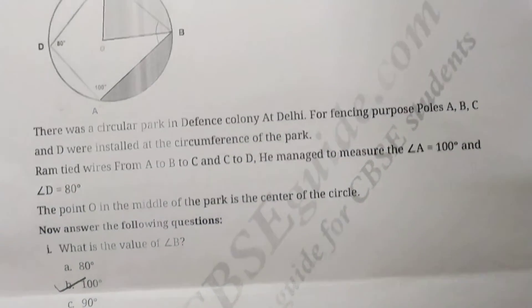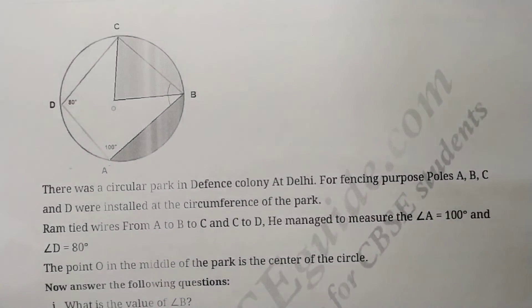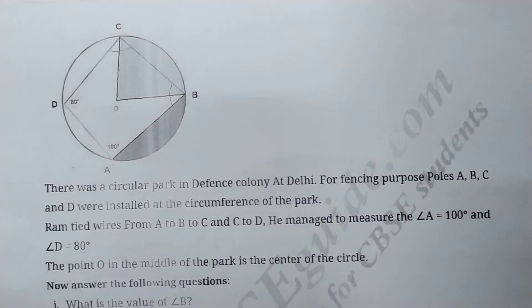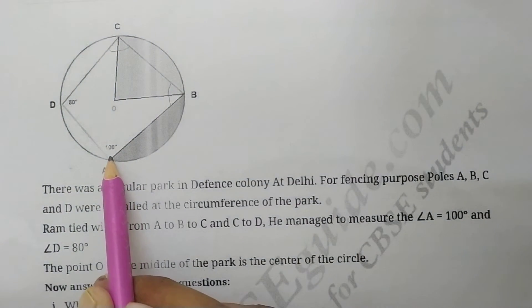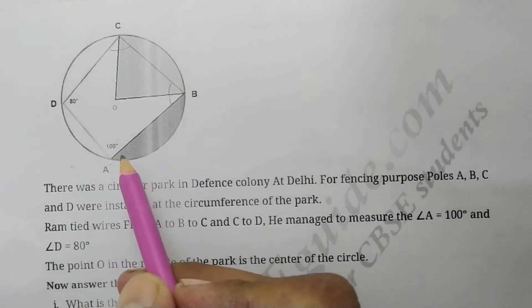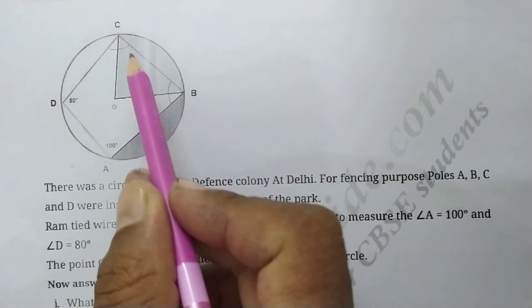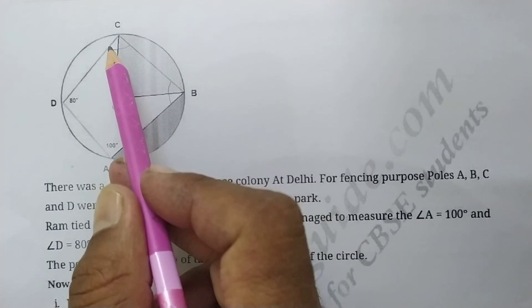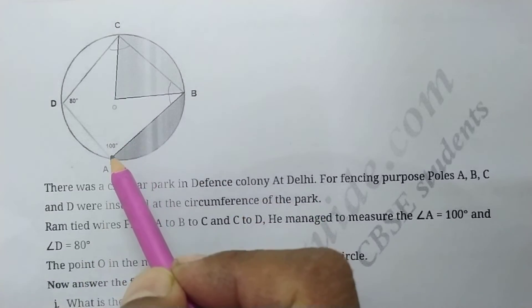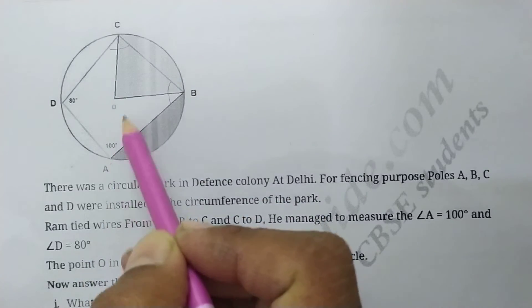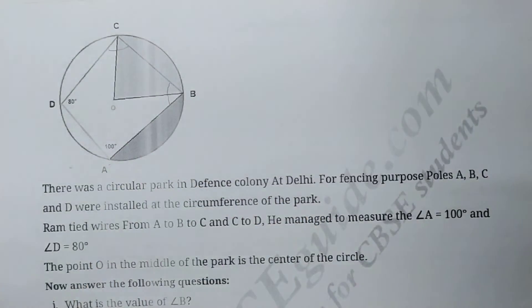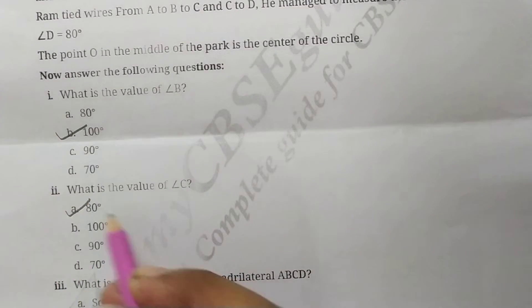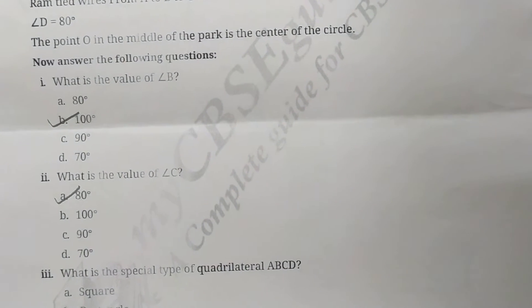Second question: what is the value of angle C? Angle A is 100 degrees, and angle A plus angle C equals 180 degrees. So angle C equals 180 minus 100, which is 80 degrees.